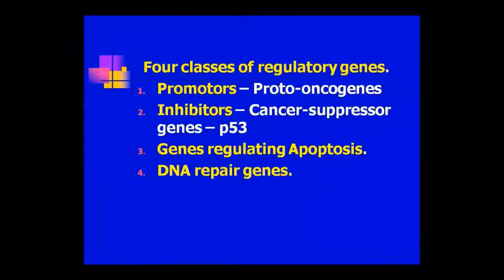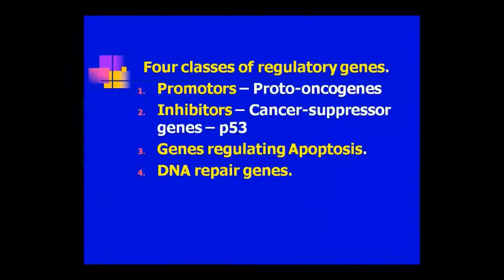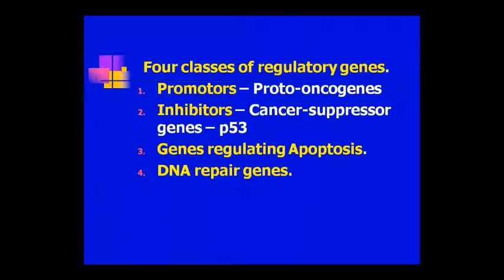Four regulatory genes can be found in us which control and stop cancer. There are physical, chemical, and biological factors responsible for cancer. For example, smoking causes lung cancer, but 60% of smokers are still alive. Why? Because the main factor is mutation in genes. Mutation is the biggest factor that causes cancer — if there is mutation, cancer will occur; otherwise, it will not.